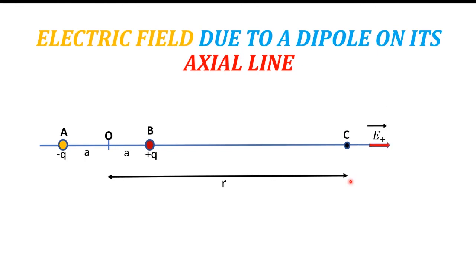Due to plus q, a field is being created. We know that the field due to plus q is always outwards, so on the axial line the field direction is from B to C. A field will also be induced due to minus q, and the field due to minus q will be in the direction of C to A.